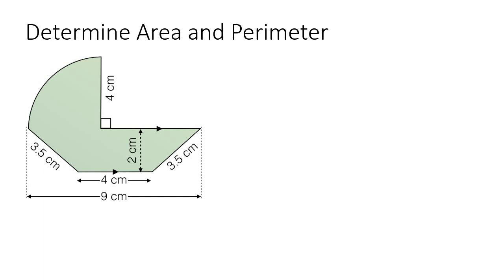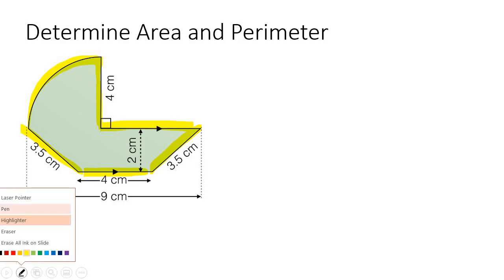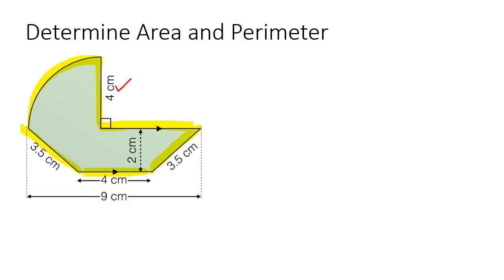For this shape we need to get the area and the perimeter. Let's start with perimeter. Remember that perimeter is the length or the distance on the outside of the shape. We already know that this length over here is 4, and we know this length, this length, and this length. So the only lengths that are missing for the perimeter would be this quarter circle part over here, and this length over here.